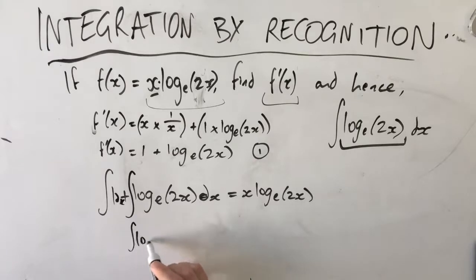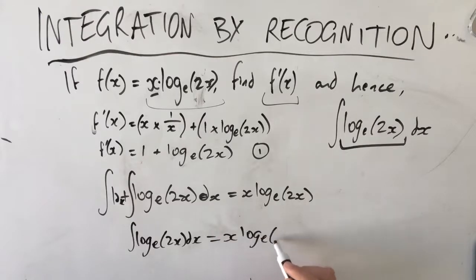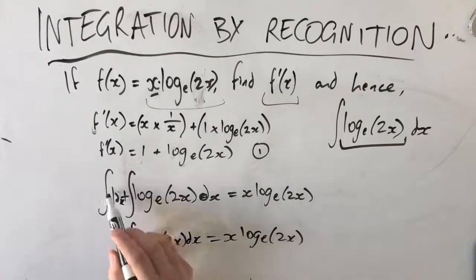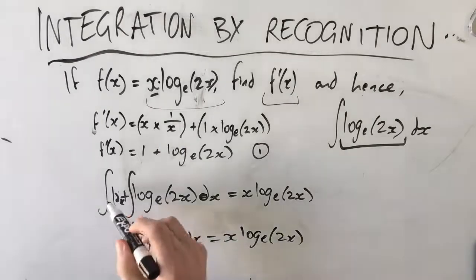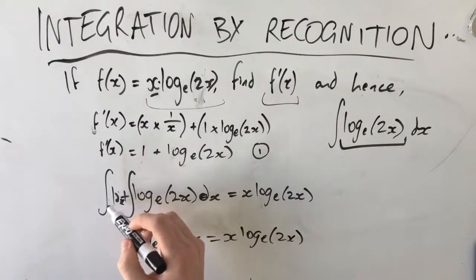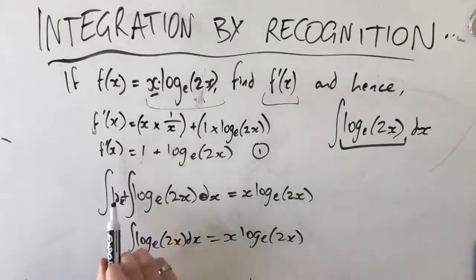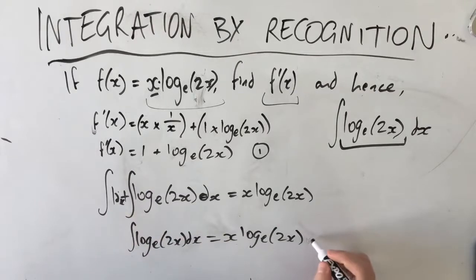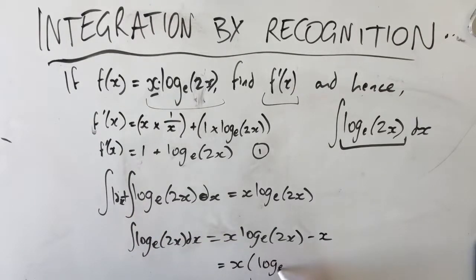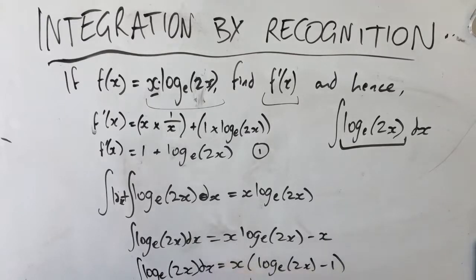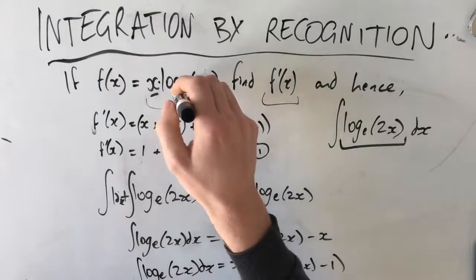So the integral of log_e(2x) dx equals x·log_e(2x) minus the integral of 1. The integral of 1 is simply x — we add 1 to the power and divide by the new power, which gives x. So we're taking away x, and you can factor out x as a common factor to end up with x·(log_e(2x) − 1). That is your integral of log_e(2x) dx.